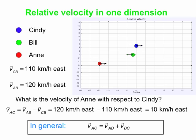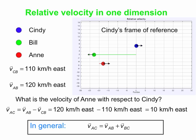What we really wanted to see is what it looks like from Cindy's reference frame. In Cindy's reference frame, Cindy is at rest. We see Bill traveling quickly to the left — moving west with respect to Cindy — and Ann is moving slowly to the east with respect to Cindy. That's totally consistent with the math. Bill would be traveling at 110 kilometers per hour west with respect to Cindy, because Cindy was traveling 110 kilometers per hour east with respect to Bill. And Ann is going 10 kilometers per hour east with respect to Cindy. This is Cindy's reference frame.